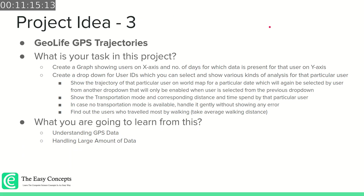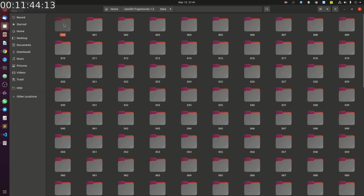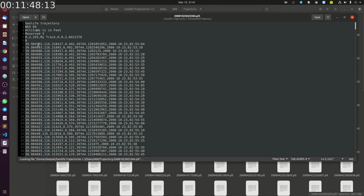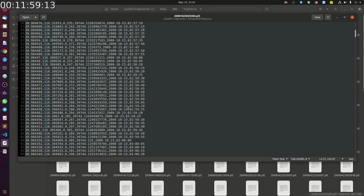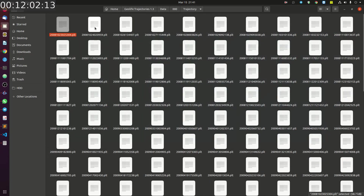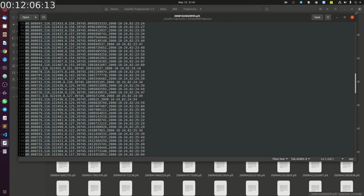So what you have to do: first, download the dataset and understand it. Then create a graph showing users on the x-axis and the number of days for which data is present for that user on the y-axis. We have data for 182 users and for each user there are multiple files. Here you can see the data — this is for the first user. If you go inside the trajectory folder, you can see latitude and longitude for a particular user at a timestamp, one file per day.